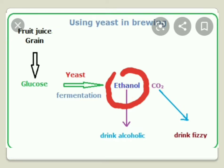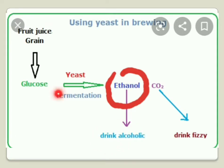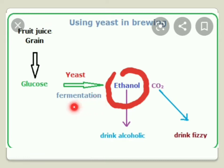Last year we learned that yeast undergoes anaerobic respiration and alcohol and carbon dioxide are produced. Here we are giving the name for the alcohol — that is ethanol — and this alcohol is used as an alcoholic drink. Yeast has the property of converting sugar, that is glucose, into alcohol. The process of converting sugar into alcohol is called fermentation. You can see that alcohol is produced, and carbon dioxide is also produced.